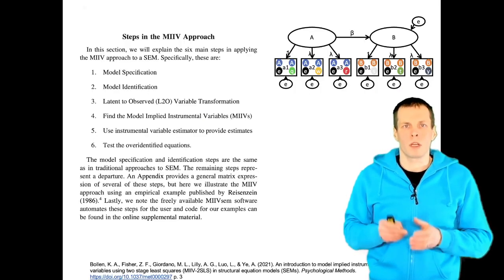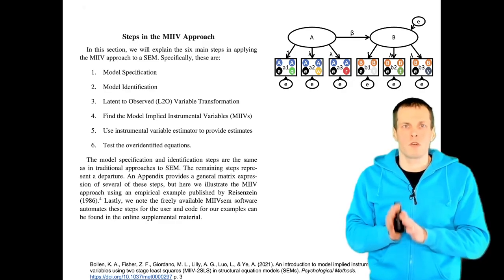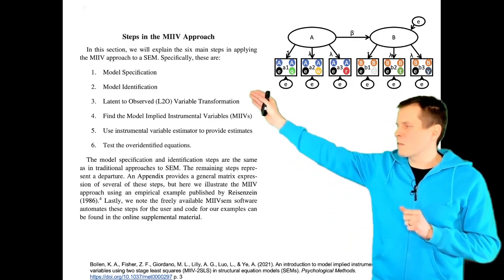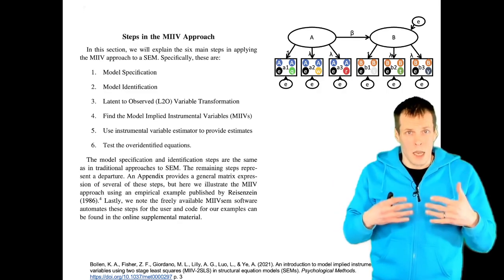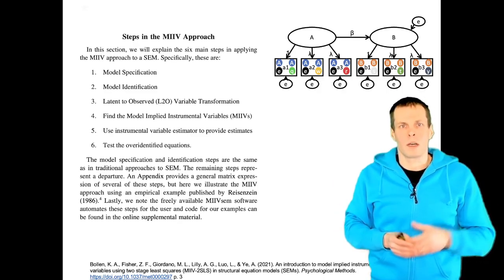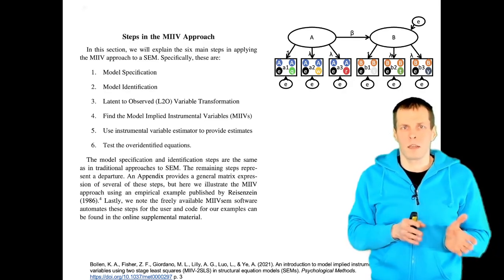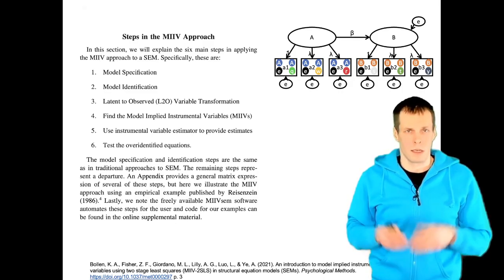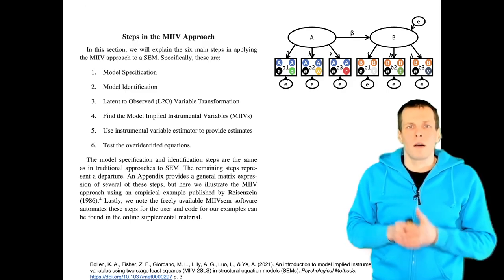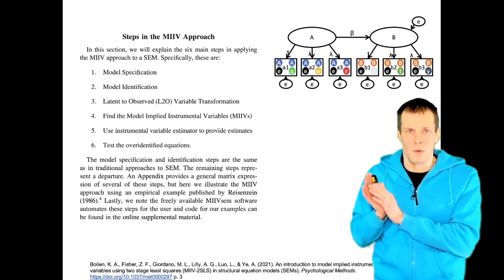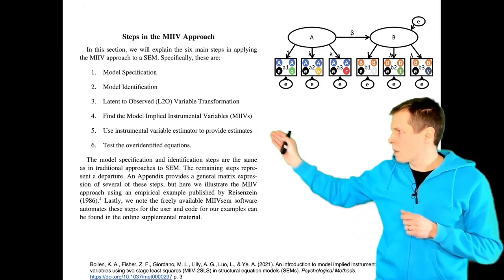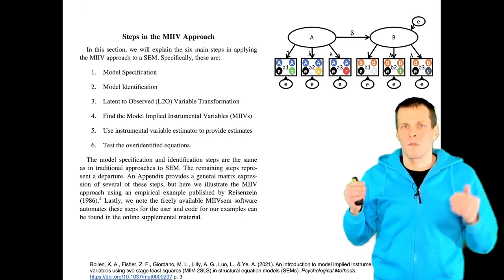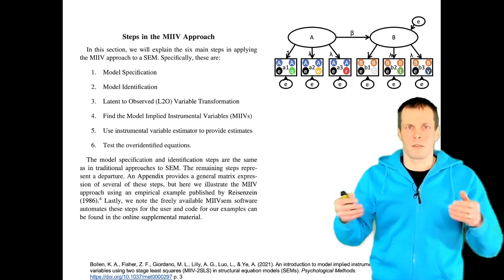The model-implied instrumental variable technique has six steps — the analysis procedure that Bollen, who is the leading advocate of this technique, recommends. The first two steps, model specification and identification, are the same as any other latent variable modeling approach. You first specify a model, then ensure it is identified: each latent variable must have a scale and must have a sufficient number of indicators.